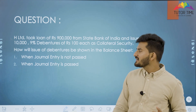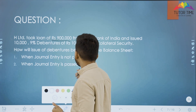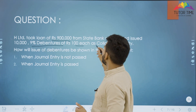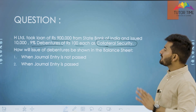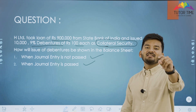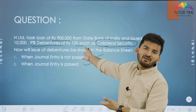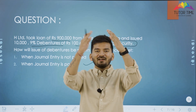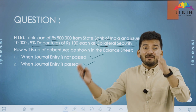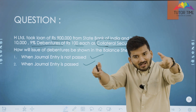Practice question: H Limited took a loan of Rs. 9 lakh from State Bank of India and issued 10,000 9% debentures of Rs. 100 each as collateral security. Two possibilities are asked — when entry is not passed, and when entry is passed. Assuming it to be long-term borrowings — if it were short-term, only the balance sheet heading changes.